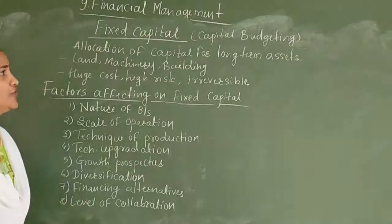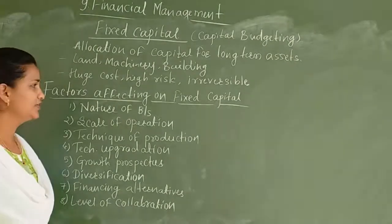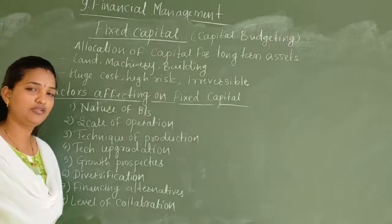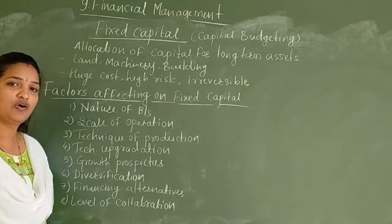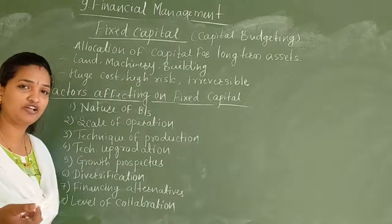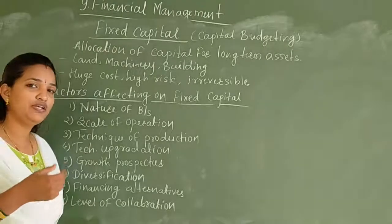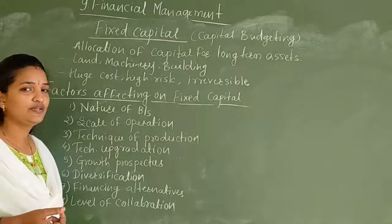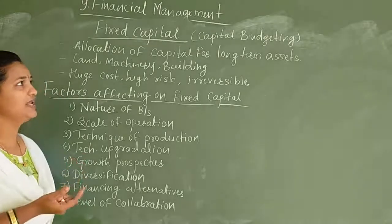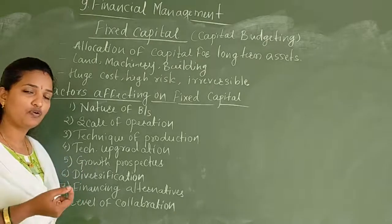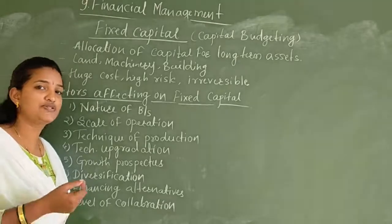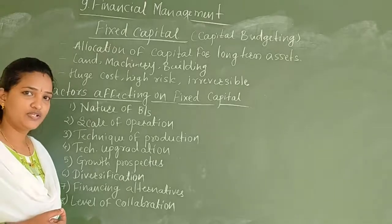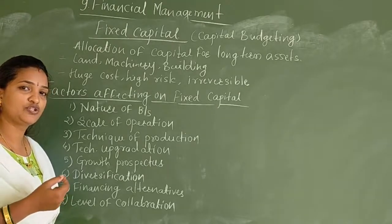Welcome to business studies class. Today we are going to discuss fixed capital and the factors affecting it. Fixed capital is the amount of money invested for the purchasing of fixed assets such as machinery, land and building, and furniture. This amount is also known as capital budgeting — how much money is involved in purchasing fixed assets. It represents the allocation of capital for long-term assets.